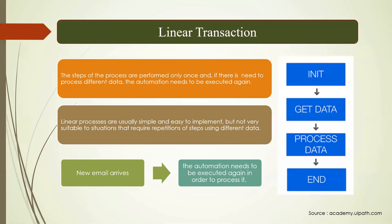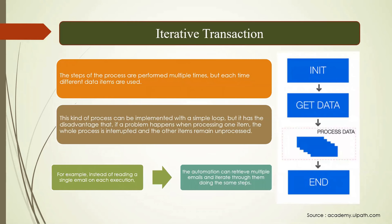In a linear transaction, if you want to rerun it for a new item you have to rerun the entire process from Orchestrator — you do the processing only once. Next is the iterative transaction. In iterative, the steps of the process are performed multiple times but each time with a different data set.